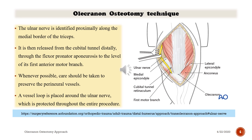Take a look at how to protect the ulnar nerve. The ulnar nerve is identified proximally along the medial border of the triceps, then released from the cubital tunnel distally along the flexor-pronator aponeurosis to the level of the first anterior motor branch. Whenever possible, care should be taken to preserve perineural vessels. A vessel loop is placed to protect the nerve.